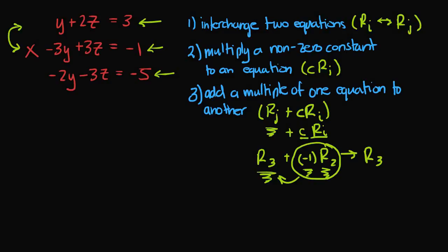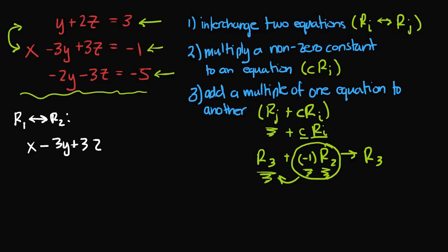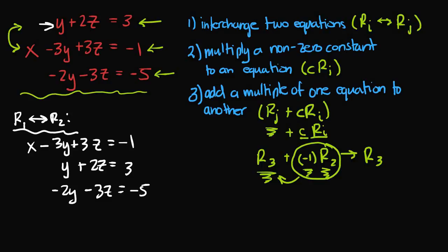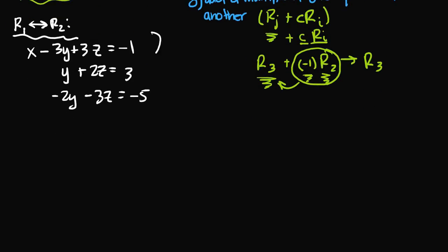Let's apply these elementary row operations to change this system of linear equations, which is not in row echelon form, into an equivalent system that is. First, I interchange row one and row two, giving a new equivalent system: x minus 3y plus 3z equals negative one, y plus 2z equals three, and negative 2y minus 3z equals negative five. This system is still not in row echelon form, so next I take row three and add to it row two multiplied by two, making that my new row three.